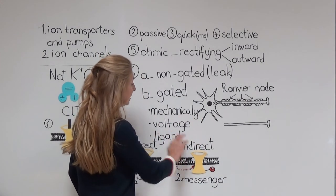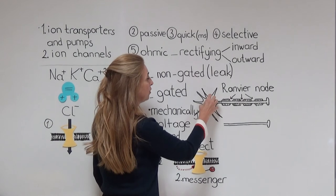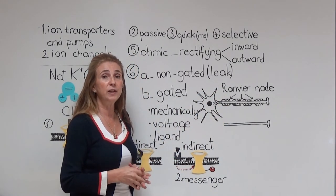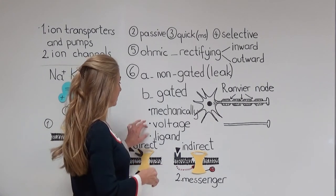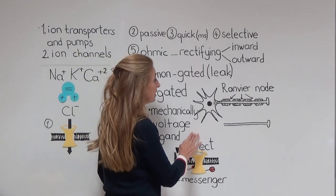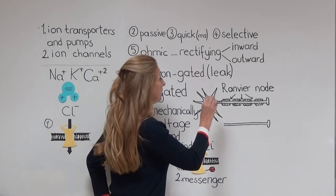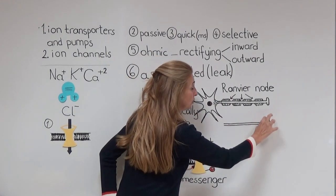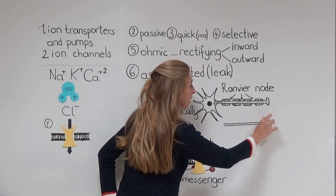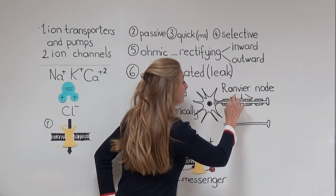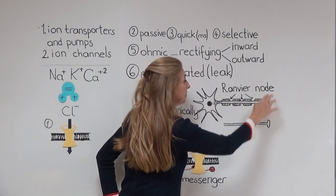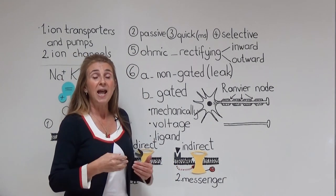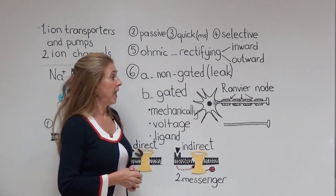Mechanically gated and ligand-gated channels are mainly on the soma or the dendrites, and they are responsible for the local potentials. The voltage-gated channels are located in the initial segment and all along the axon in unmyelinated axons, or at the Ranvier nodes in myelinated axons. They are responsible for the production and transmission of action potentials.